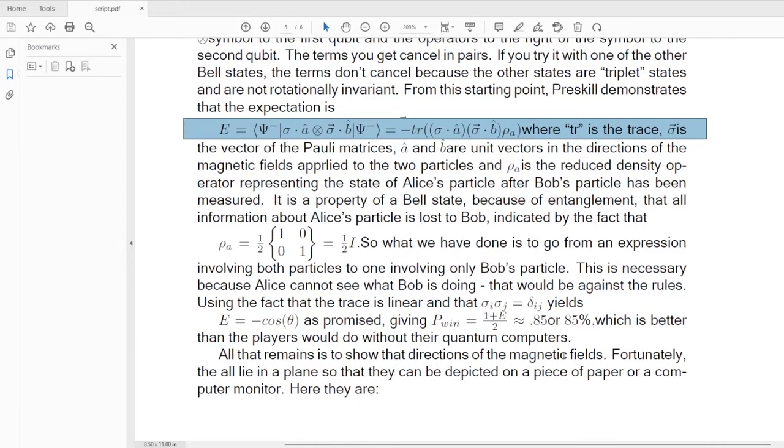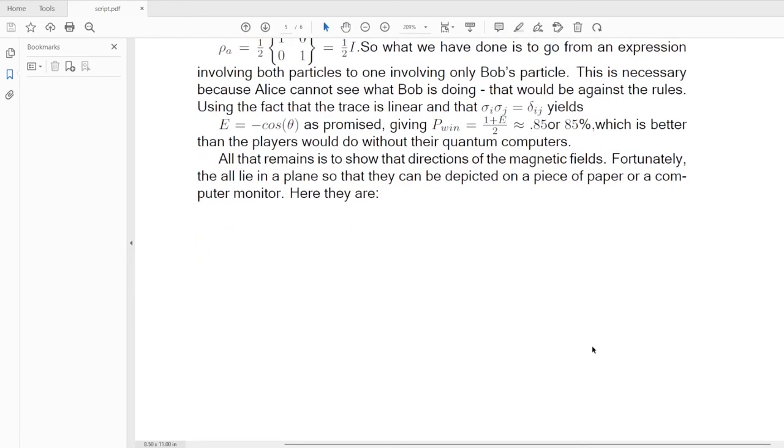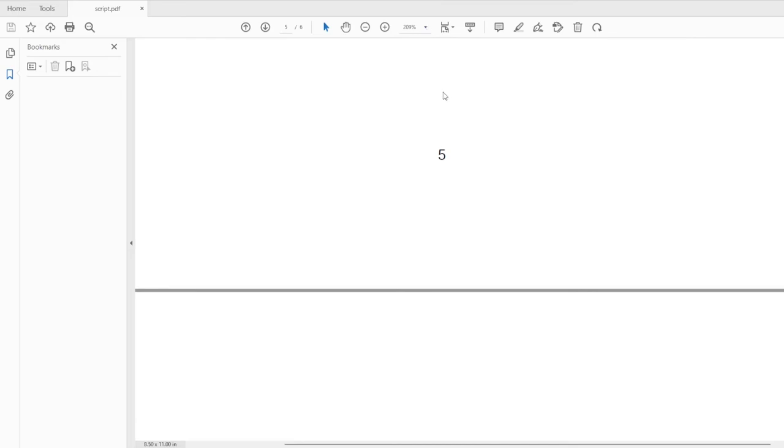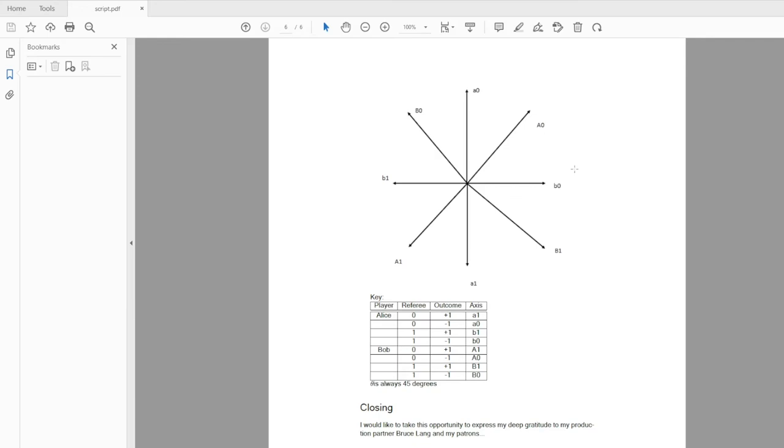This is why entanglement is referred to as a resource. Because people can use it to accomplish things that they would not be able to do without their quantum computers. All that remains is to show the directions of the magnetic fields. Now they all lie in a plane, so they can be depicted on a piece of paper or a computer monitor, and here they are. I've provided a key showing the measurement axis depending on the referee's input and the measurement outcome. So A0 is opposite A1, B0 is opposite B1, and so on. Theta is always 135 degrees.